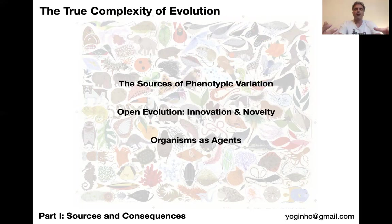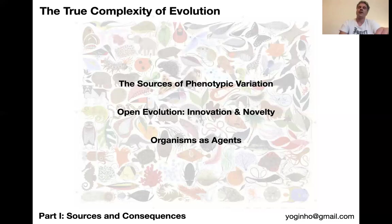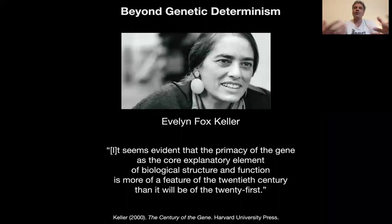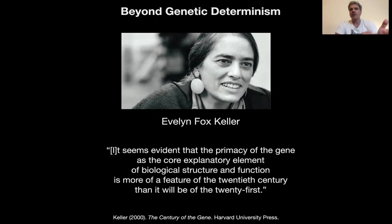At the end of this module, we're going to look at organisms as agents and the direct consequences this has for evolutionary theory. If we take the organism seriously again, putting it at the center of evolutionary theory, what kind of consequences does this have for our thinking about evolution — and also in a more philosophical manner, on how we explain evolutionary phenomena? This whole second part of the lecture is motivated by the quest of moving beyond genetic determinism, which is very strong in molecular genetics and developmental genetics, but even stronger in evolutionary genetics.